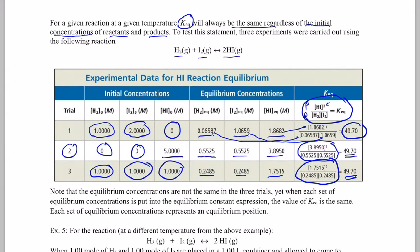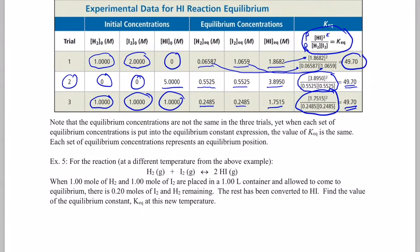Regardless of the initial concentrations of reactants or products, when equilibrium is established, we will always end up with that same ratio for that reaction, so long as we don't change the temperature.